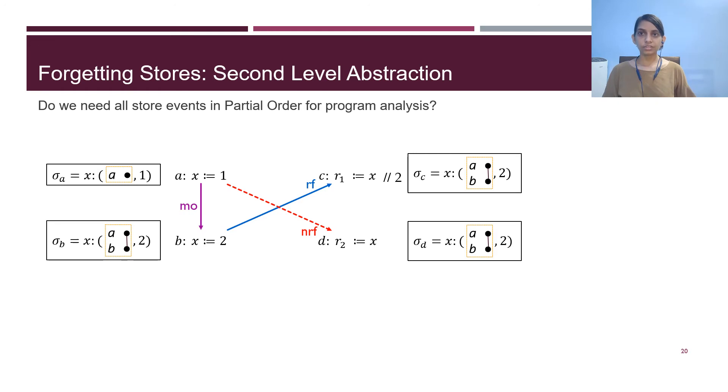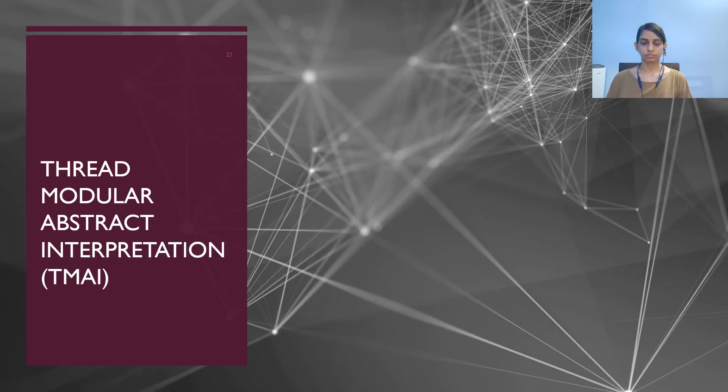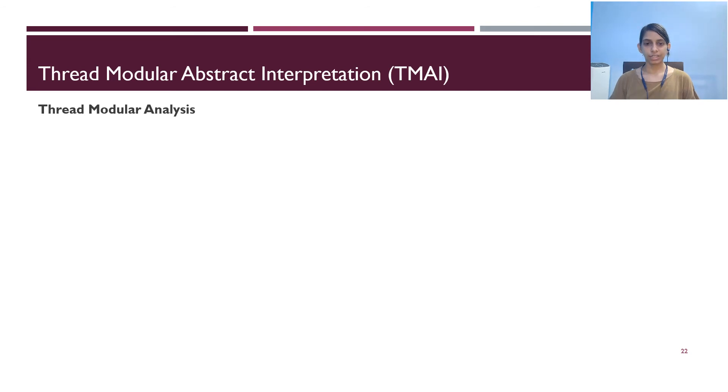Further, we ask if we really need the entire modification order. The RA axiom states that Sb over the stores of a variable is subset of modification order over the same variable. Therefore, if some PO consists of an event from B, we may conclude that event from instruction A has already occurred. We leverage this to define an upper approximation operator alpha sharp for this PO domain. The alpha sharp abstraction simply forgets sequence before stores.